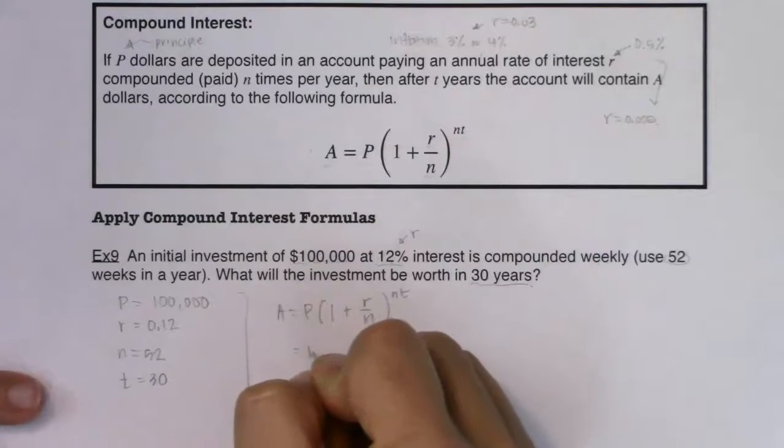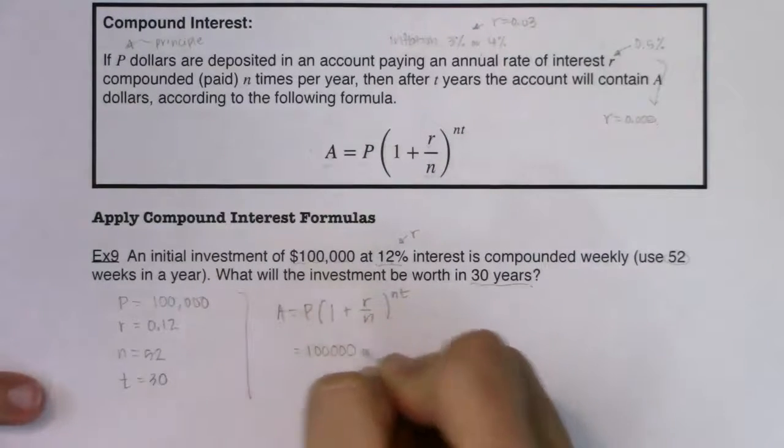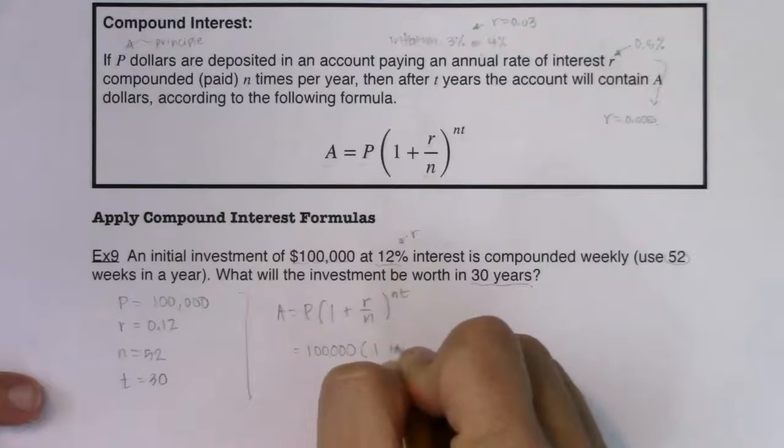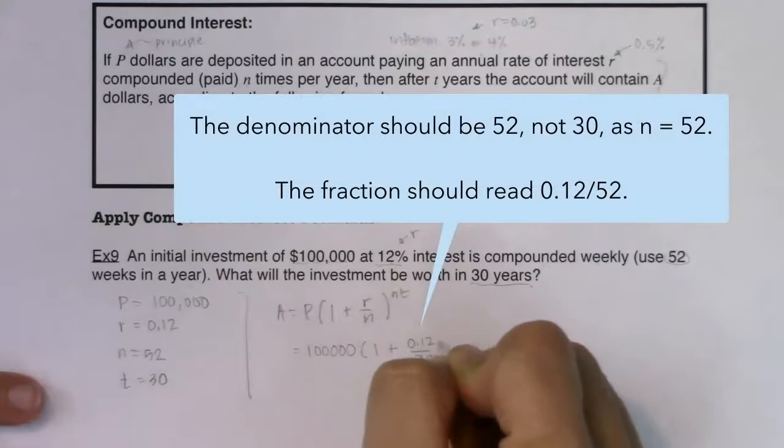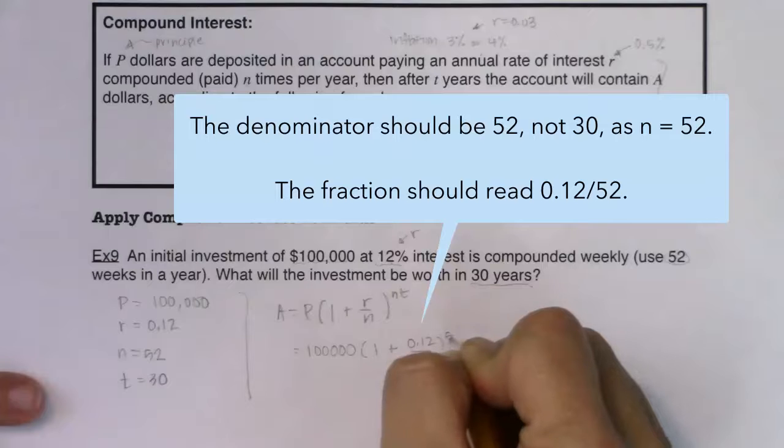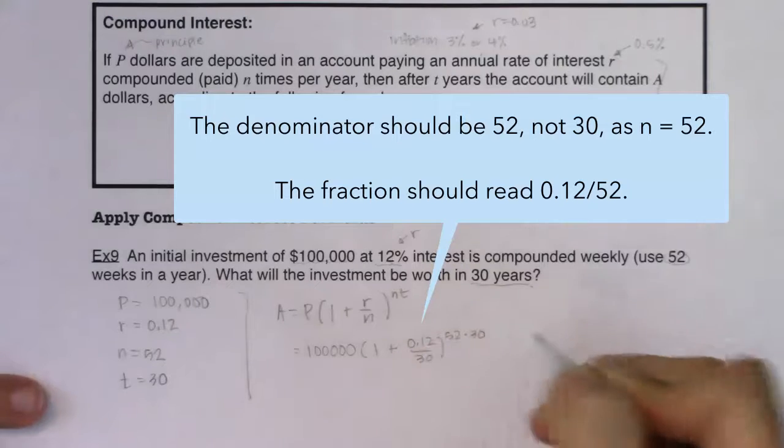So this will be equal to 100,000 times 1 plus 0.12 over 52 to the 52 times 30. Okay.